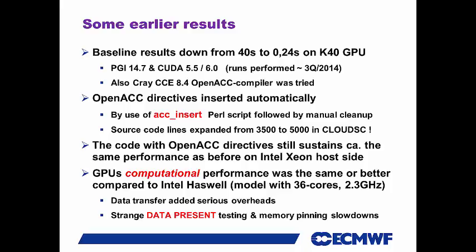At the time, a year ago, we had a slightly different Haswell — actually an NDA Haswell, so I was not supposed to say anything about it then. It was a 36-core system at 2.3 GHz. When comparing GPUs against that, there was a lot of data transfer overhead, and also something strange going on with data present testing and memory pinning, which I think have been sorted out in the latest PGI version.